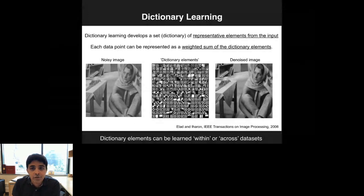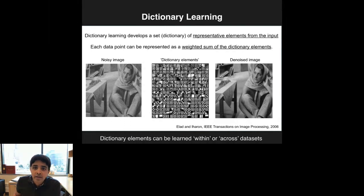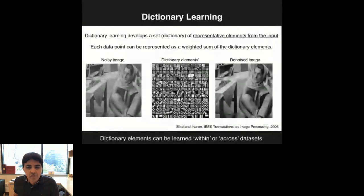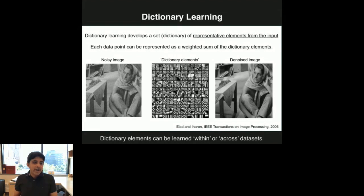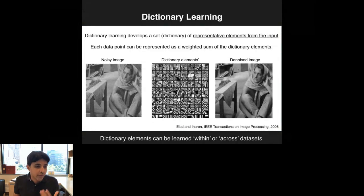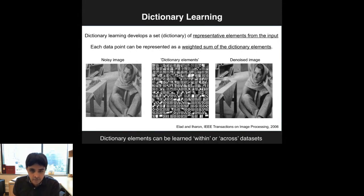Dictionary learning is a set of techniques very commonly used in image analysis and increasingly in genomics. The idea is that you have a dataset—in this case a noisy image—and you take a subset of data points, like little patches. You can see how certain patches make up small pieces of the tablecloth, the floor, or the scarf. That collection of patches we call a dictionary. Then we take each data point and reconstruct each part of the image as a weighted sum of those dictionary elements. If you do this reconstruction process, you can very accurately denoise the image. The essence: you're learning how to represent a dataset as a combination of individual data points—this is a form of representation learning.